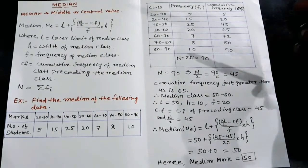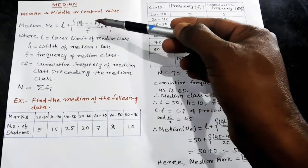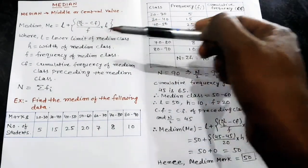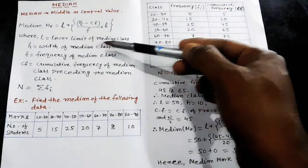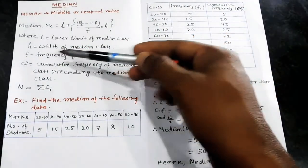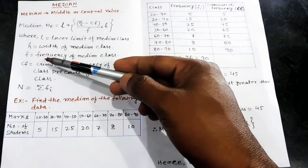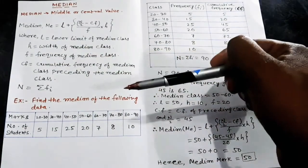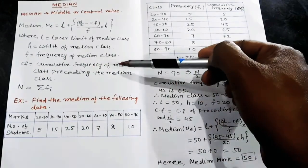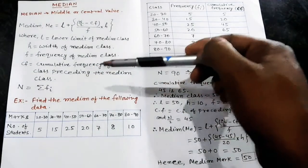The formula for median is: ME = L + (N/2 − CF) / F × H, where L is the lower limit of the median class, H is the width of the median class, F is the frequency of the median class, and CF is the cumulative frequency of the class preceding the median class.